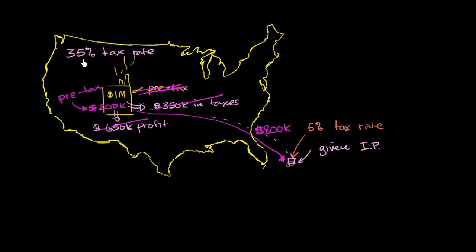And so in the US, it would only pay 35% of the $200,000. So instead of paying $350,000 in taxes, it would now pay 35% of $200,000, $70,000 in taxes. And the US parent company would show a profit of $200,000 minus the $70,000 of $130,000. So $130,000 net profit, or we could say post-tax profit.